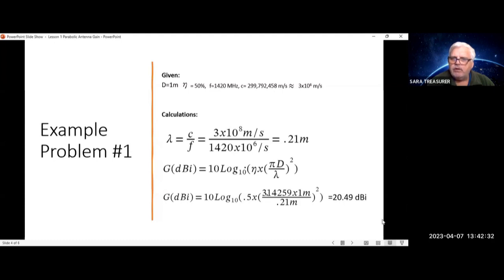If you put your lambda in that formula along with the 0.5 and the pi and the 1 meter, you get the below equation. And that is equal to 20.49 dBi.